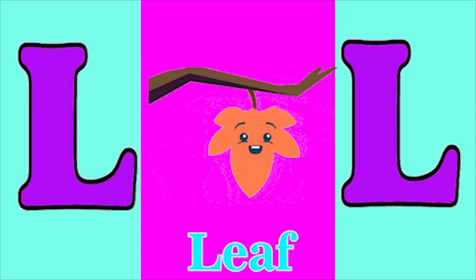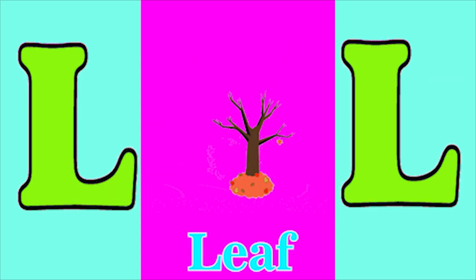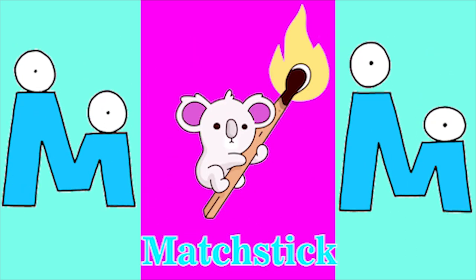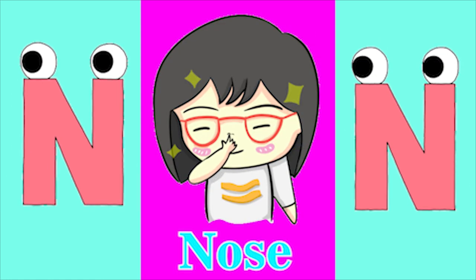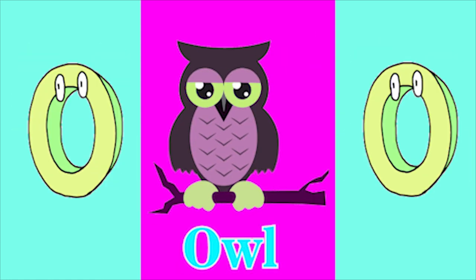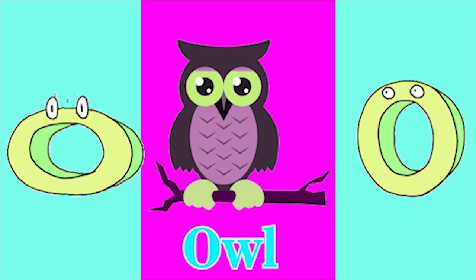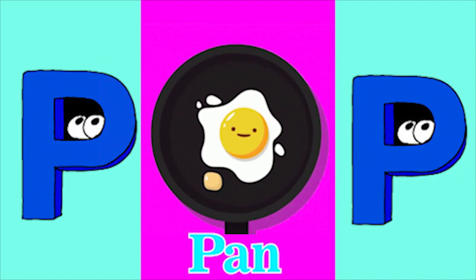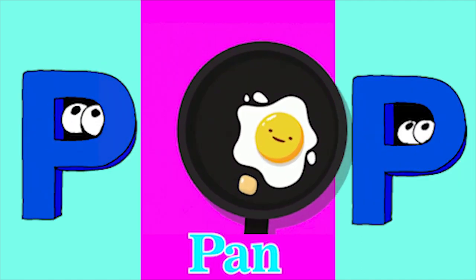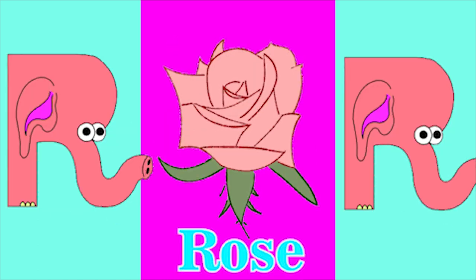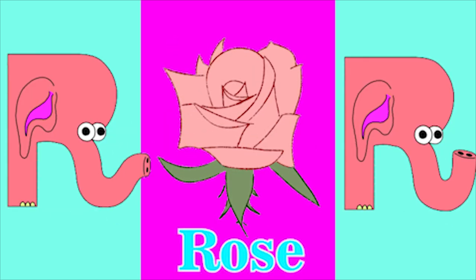L for leaf, M for magic, N for nose, O for owl, P for pan, Q for quiet, R for rose.